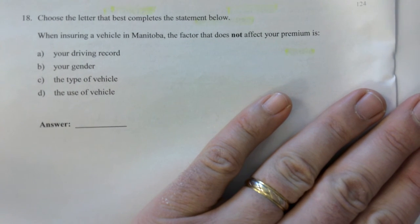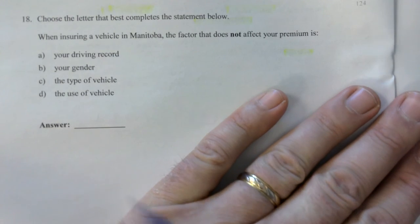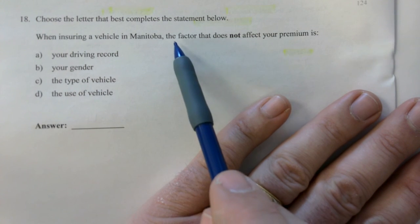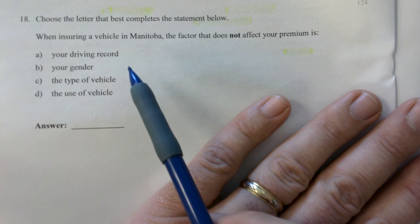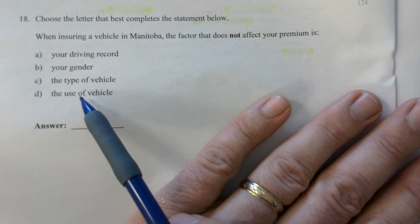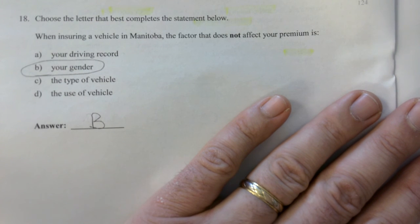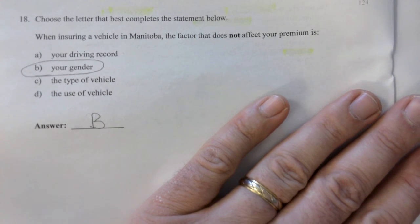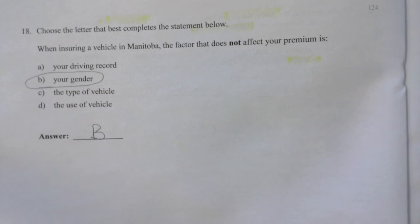Almost there guys. One mark. So two marks for the first one. I don't know why they do two marks there and one mark here. But because it's about the same level of difficulty, but hey, we don't argue with them. I guess to know what a fuel economy is and that you use it. Next page, multiple choice. This one was controversial. Choose the letter that best completes the statement below. That's page 19. When insuring a vehicle in Manitoba, the factor that does not affect your premium is your gender. The gender does not affect your premium.